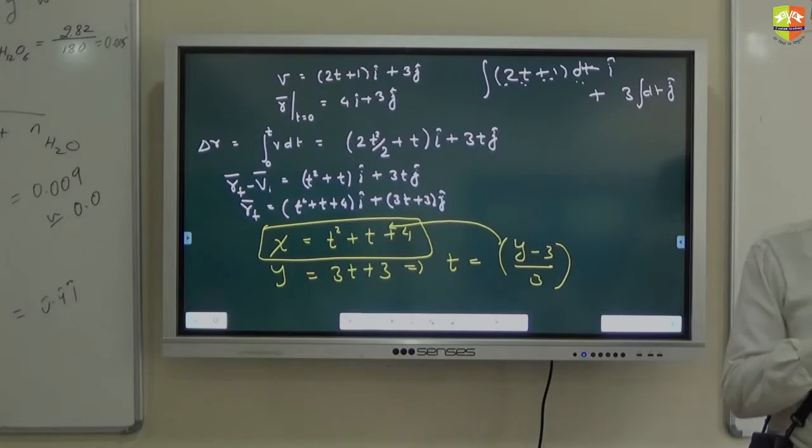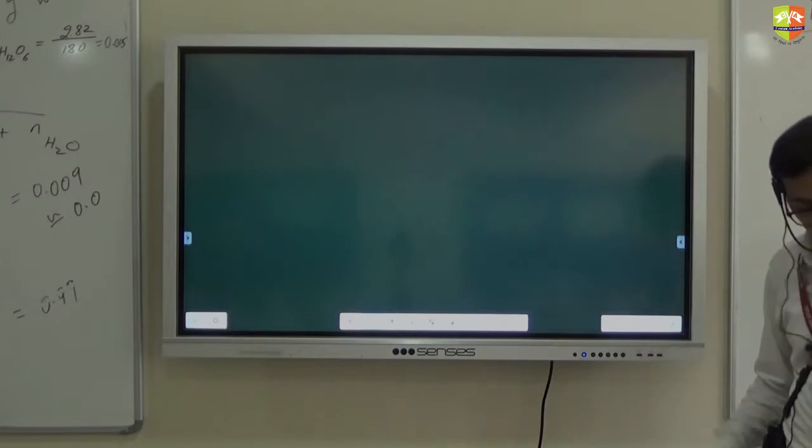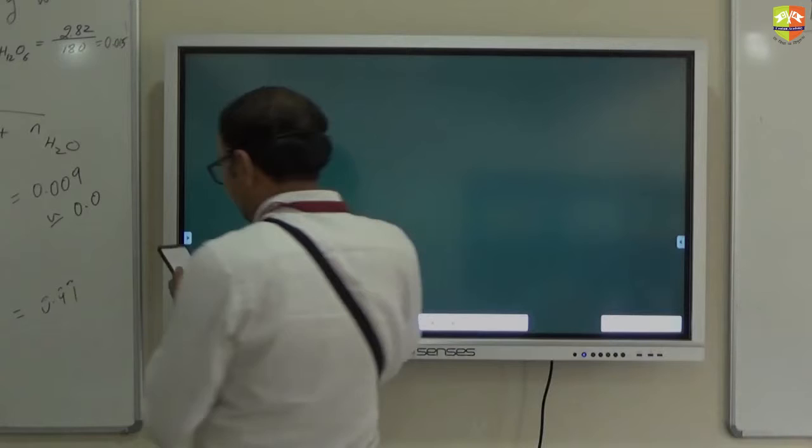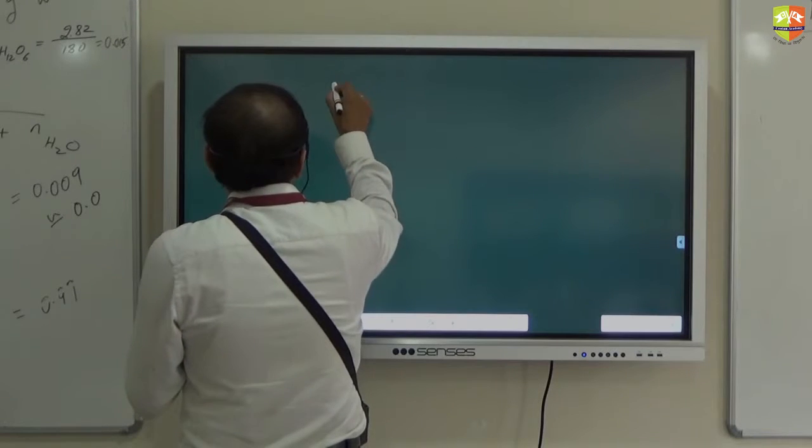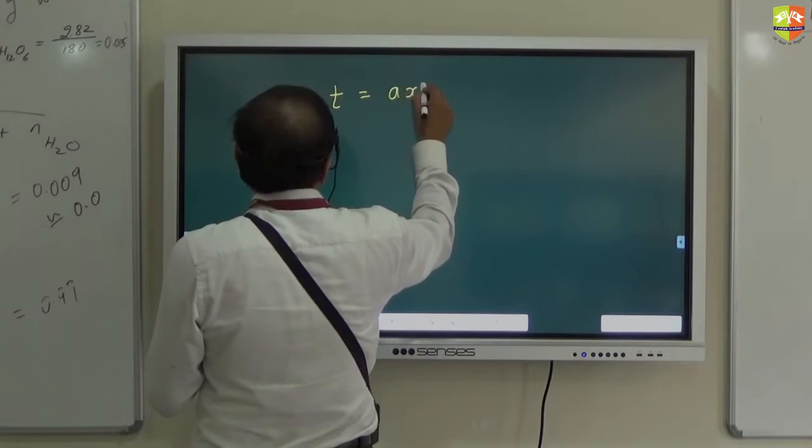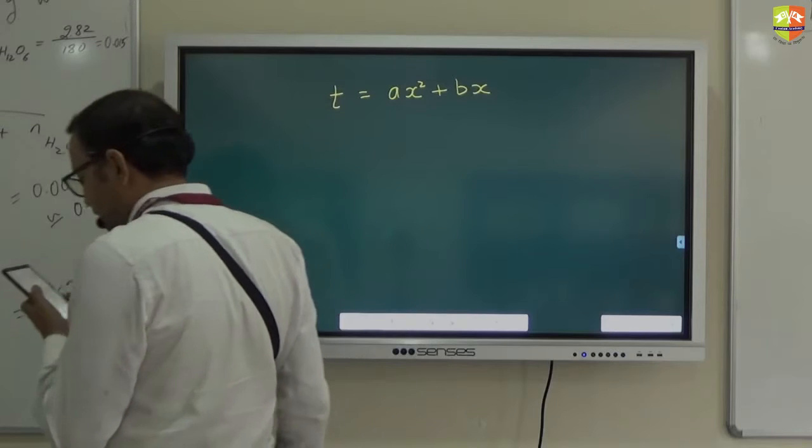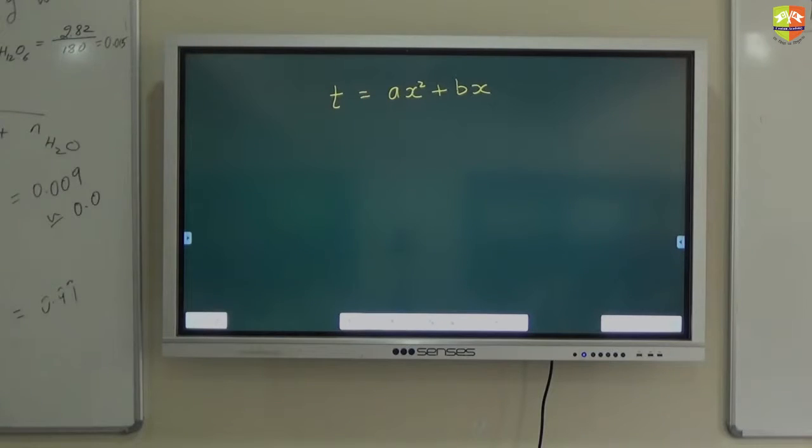Anyways, one last question to you. Last question for the day. T is equal to AX squared plus BX, where A and B are constants.